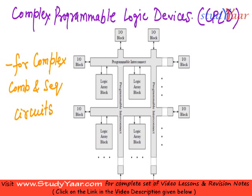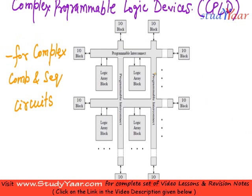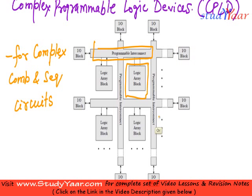It basically has some major blocks. It has a logic array block, it has programmable interconnect, and it has an IO block. Let's look at each one of them one by one.